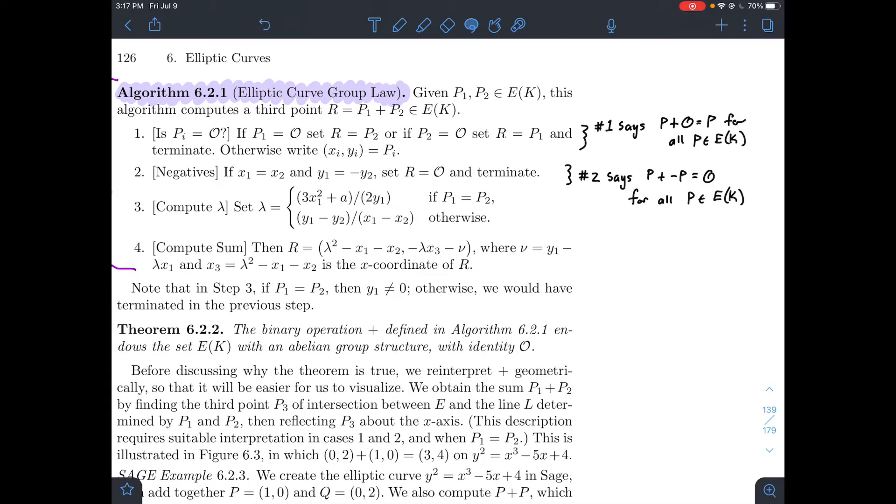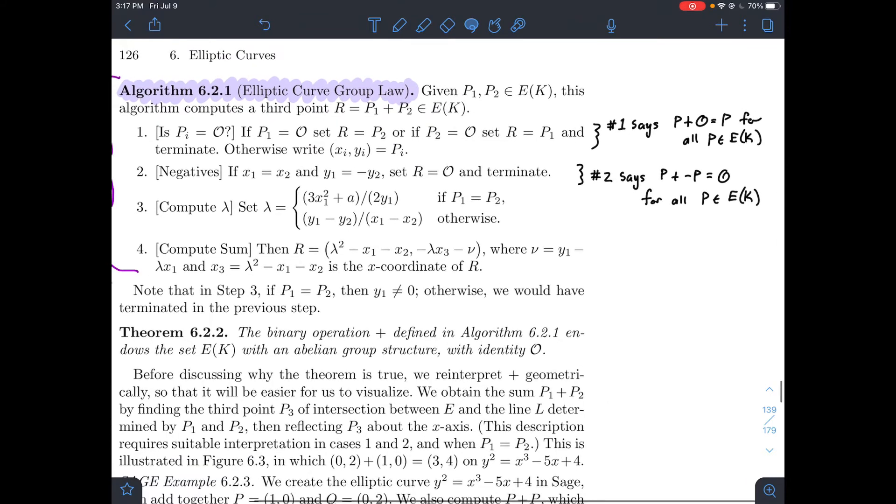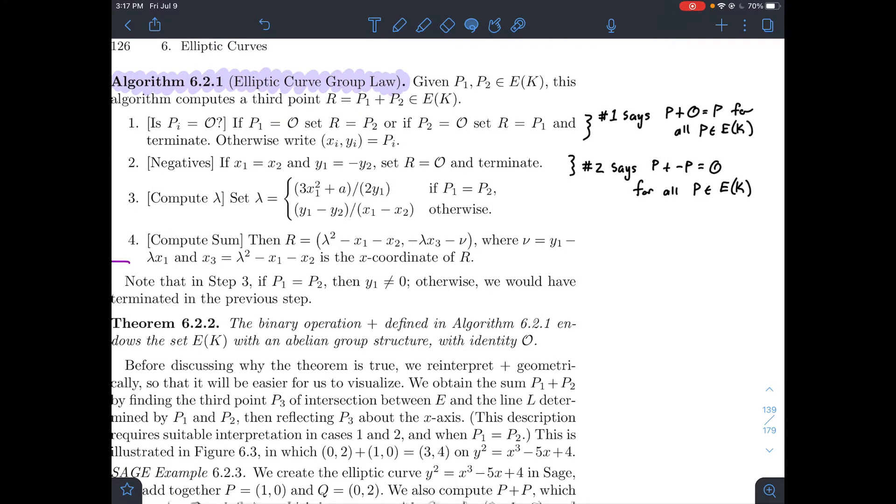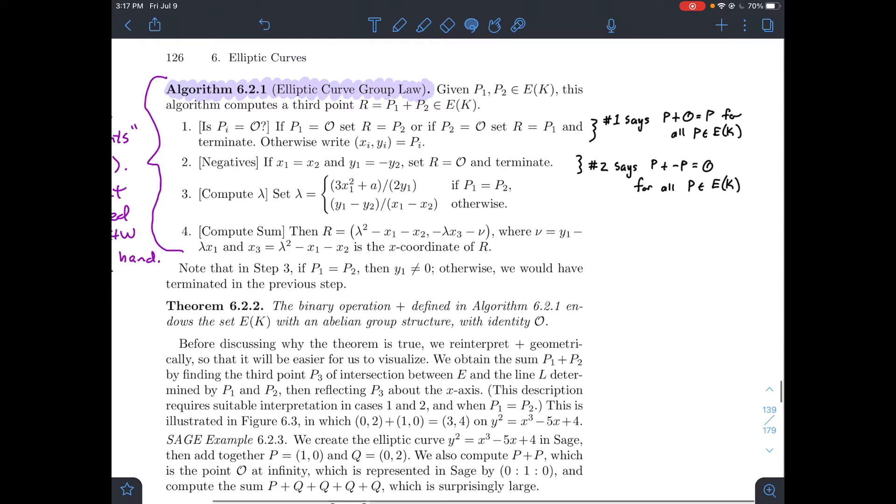And then number two here, what does it say? If you have two negatives of each other, so you have two points, p1 and p2, but notice that y1 is equal to minus y2. So they're like vertical, they're on the same vertical line. That's what we mean by negatives of each other. Then when you add them together, you should get the point at infinity. So in other words, that says p plus minus p should give you O for all p in E(K).